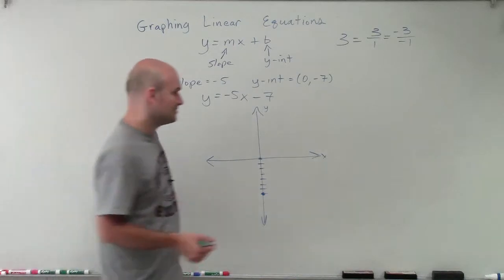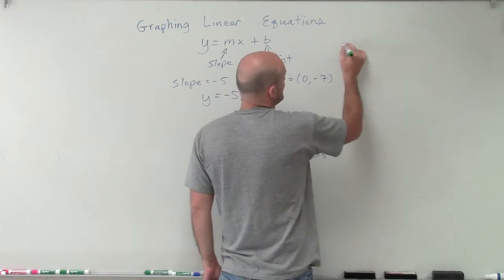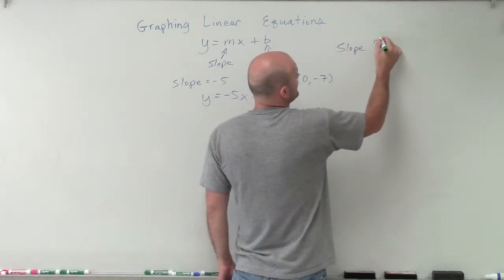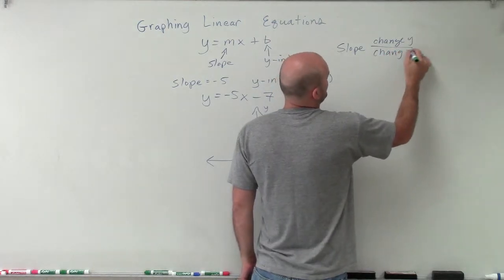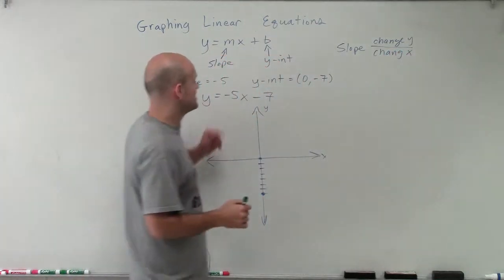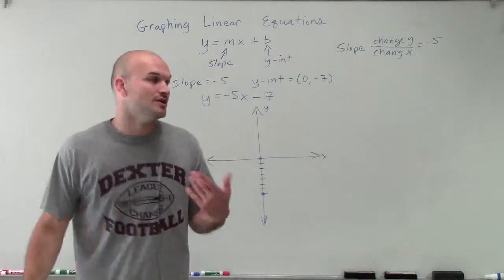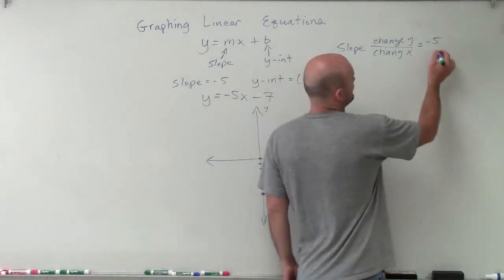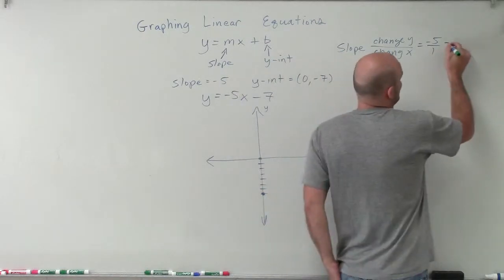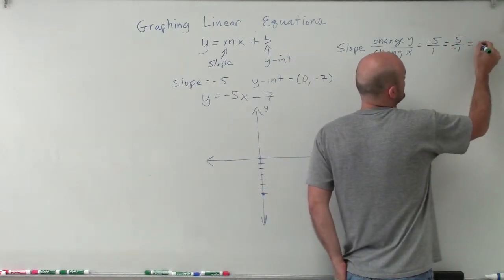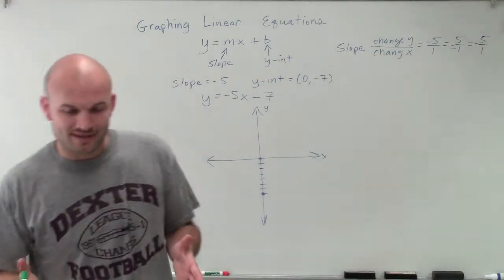Then our slope is a negative 5, which again, tricks up a lot of students. Because we've talked about the slope is the change in y over the change in x. In this case, I have that as negative 5. Well, remember, we need to write this as a fraction. So we can write this as negative 5 over 1. But negative 5 divided by 1 is the exact same thing as 5 over negative 1, which is also equal to negative 5 over 1.